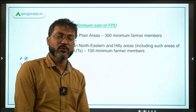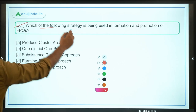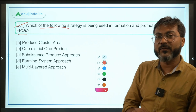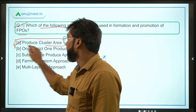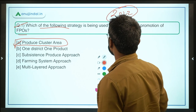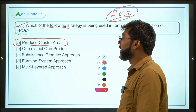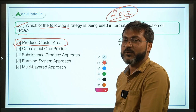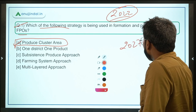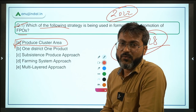Now let's do some practice questions. Question 1: Which of the following strategies is being used in the formation and promotion of FPOs? The answer is Producer Cluster Area approach. Also note: this scheme targets doubling farmers' income by 2022. Additionally, all 10,000 FPOs are to be formed by 2027-2028 — that is the financial deadline.